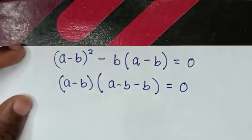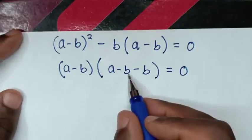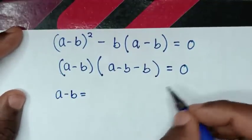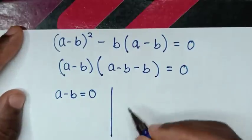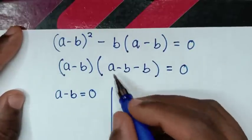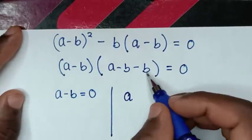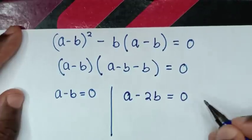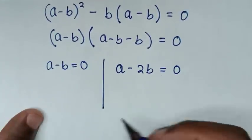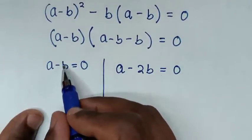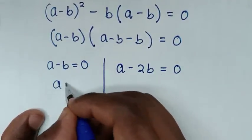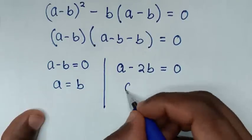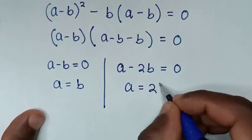From this equation, we factor out (a - b): (a - b)[(a - b) - b] = 0, which gives (a - b)(a - 2b) = 0. This yields two solutions: the first is a - b = 0, so a = b; and the second is a - 2b = 0, so a = 2b.